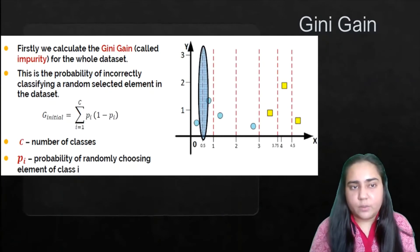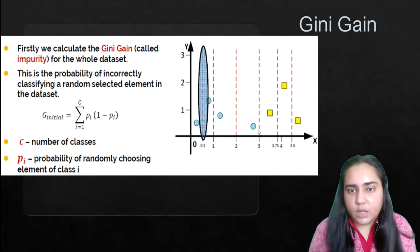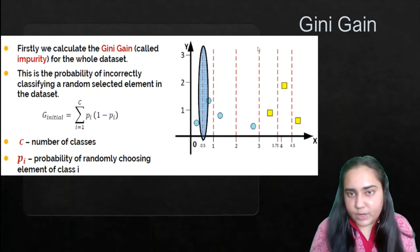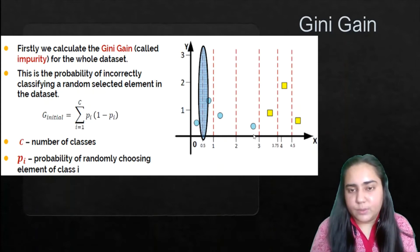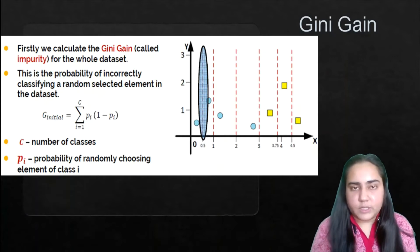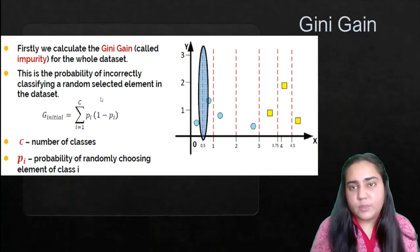What is Gini gain? The Gini gain is the impurity for the whole dataset. If you say a particular split is the one you want to go with, the Gini gain measures how good that split is, because every split other than the best one is going to cause errors. For example, choosing split at 2 would cause one blue to be incorrectly classified as yellow. Gini gain quantifies this impurity of the selected split — it is the probability of incorrectly classifying a randomly selected element in the dataset.